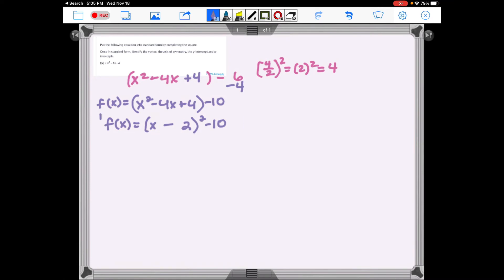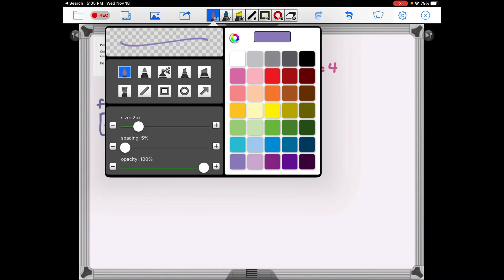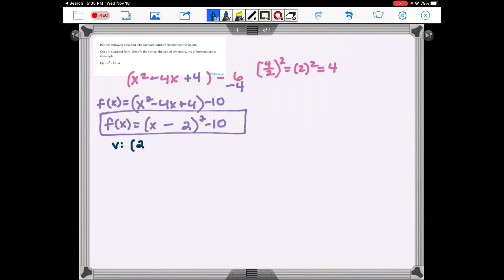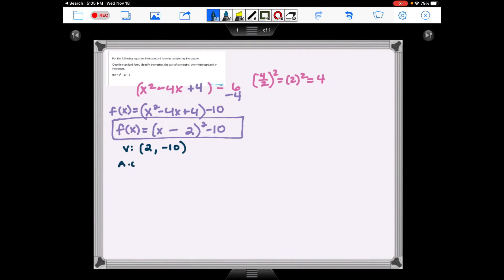From here, I'm going to identify my vertex, opposite of what follows x, and then what follows the parentheses. Keep that the same. The axis of symmetry, x = 2. The y-intercept. Plug in the zeros for x, and I'm going to plug it in up here because it's easiest. Negative 6. And then the x-intercepts, which I'm not going to work out again because I already did, is ±√10 + 2 or (2 - √10, 0) and (2 + √10, 0). So if this was the actual video, I'd actually make sure I write all that out.